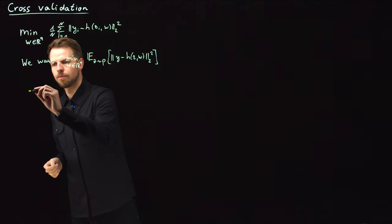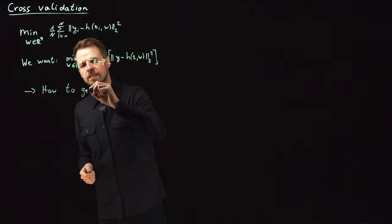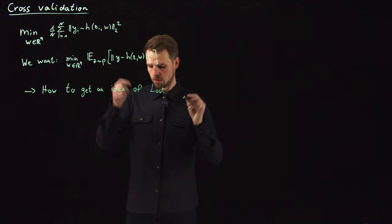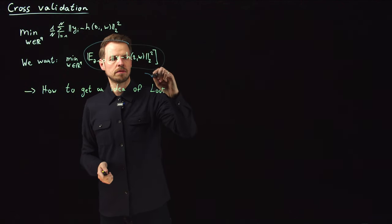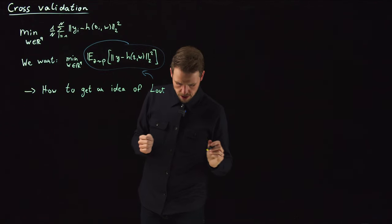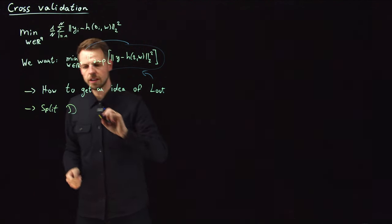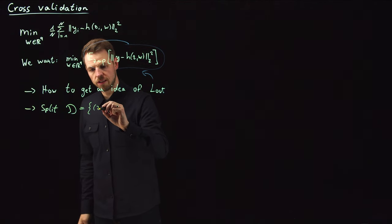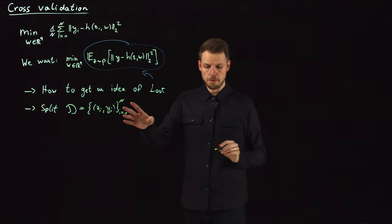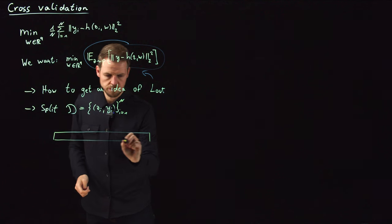So the question is how to get an idea of the out of sample loss? How do we get an idea of what the out of sample performance actually looks like? And the idea is actually very simple. We split the data set. So what we have is, this is what I'm going to call D, which is our set of tuple zi and yi, where this i goes from one to n. So we simply split it into different parts. And so let's do it visually. Let's just assume that this is our data set. So this is our D.